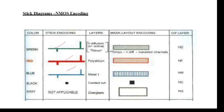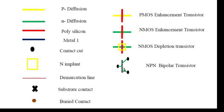The box contains — a green color box with right-side lines is the N diffusion symbol. This is the poly symbol — poly is red color — and this is a metal symbol for mask layout diagrams. This is a contact cut, black color. Coming to the type symbols, this is an NMOS inverter symbol and this is a PMOS inverter symbol.